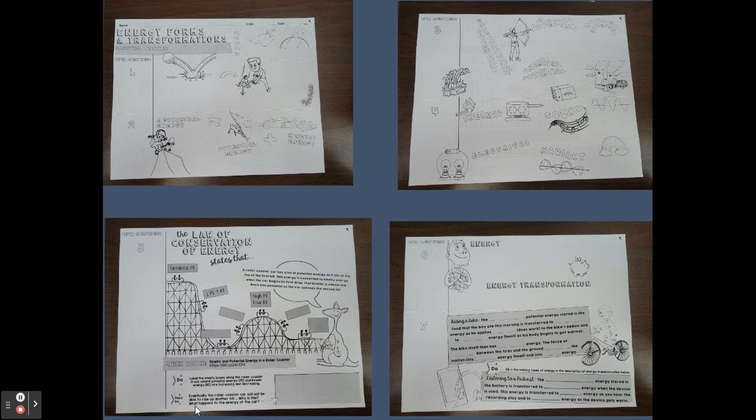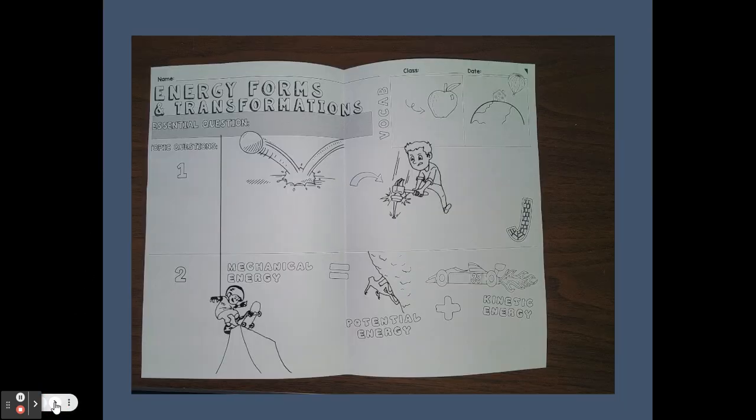All right, so you've got four handouts and they look similar to this here. I want you to notice these are similar to doodle notes that we've done in class and they're going to be done like Cornell notes. Cornell notes—remember, the main points go on the left side. So if you notice on your papers, it's a little hard to see, I know. Mine's a little bigger. Let me go to the next one so you can see.